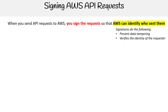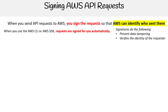Just so you know, when you're using the CLI or SDK, requests are signed for you automatically. The only time you would be signing requests manually is if you're using the API directly through HTTP. In general use, you do not want to do that unless you have to for some very specific use case, because you cannot use the SDK or CLI.